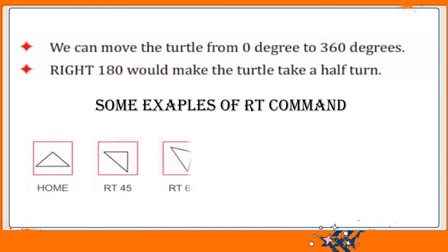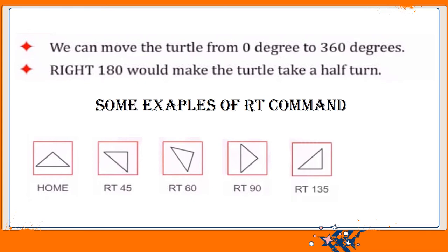Using rt 60, the turtle takes a turn a bit more than rt 45. Similarly, rt 90 turns the turtle to the right side by 90 degrees. With rt 135, you can see the direction of the turtle's head changes again. Then with rt 180, as we discussed, it takes a half turn — you can see the difference between the home position and rt 180, as it takes exactly a half turn.